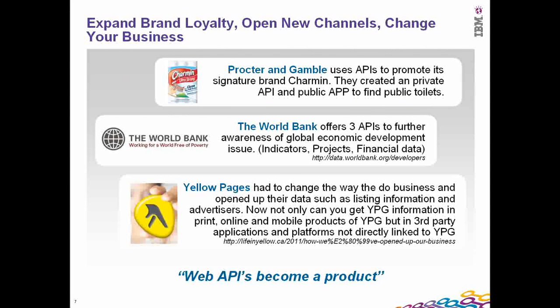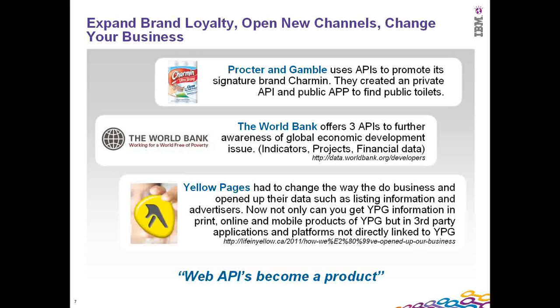A couple of other examples: the case of Procter & Gamble. This is an example of how an application can actually take your business forward. Procter & Gamble built an application that can help people locate public toilets, and through that application they actually promoted their Charmin brand. That's an example of how you can innovate and use an application which is outside the normal stream of things you would otherwise do in your enterprise, to actually penetrate and push your brand further into the external world.